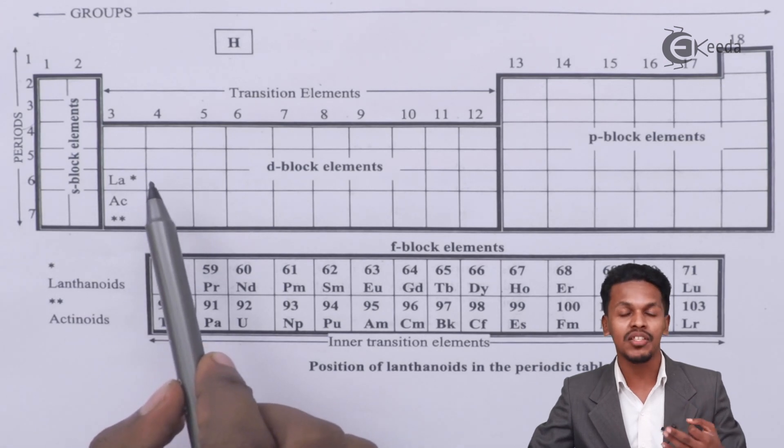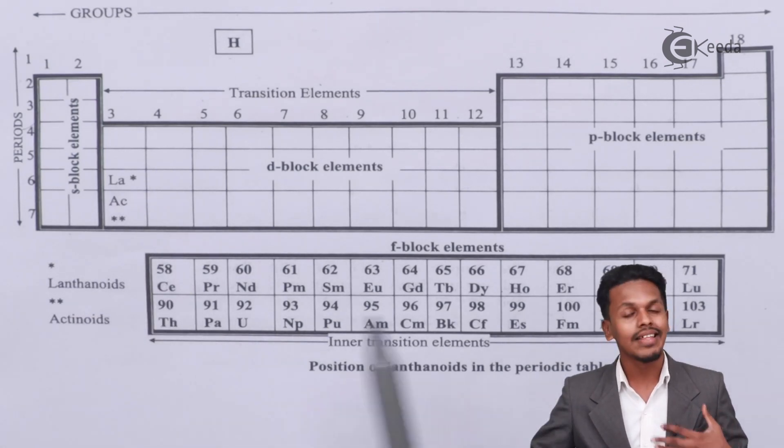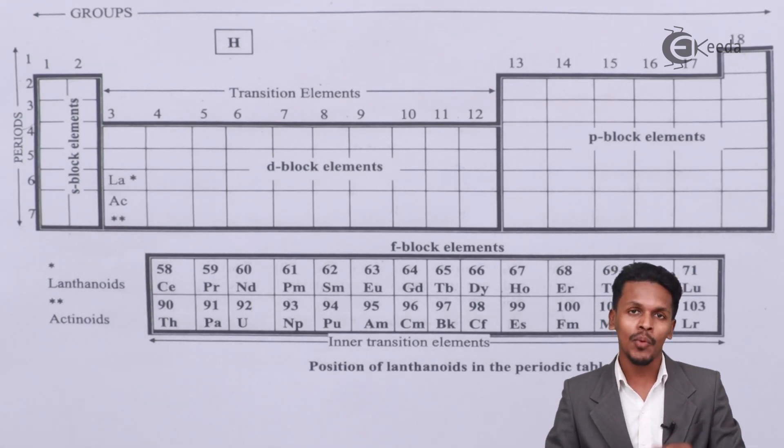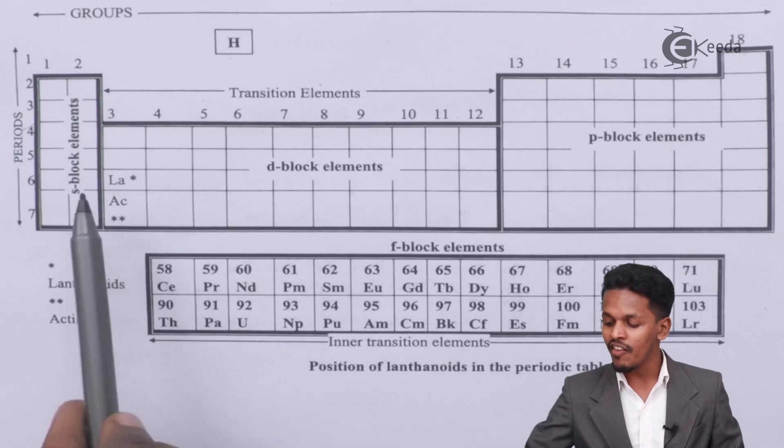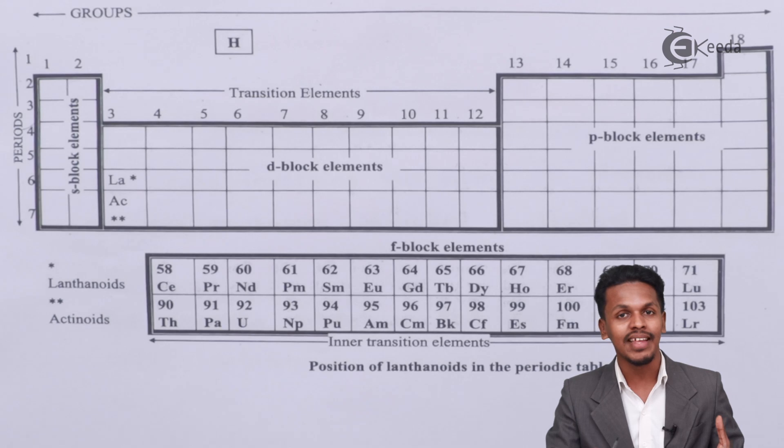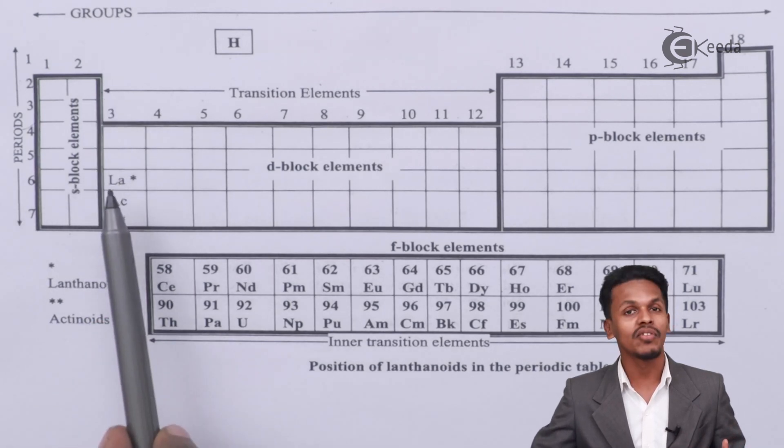And talking about hafnium, obviously it will have a valency of 4. So that is the reason that because of various other things these are basically kept in this position only. And suppose if all these elements have been kept side by side, in that case the whole periodic table would have been disrupted. And that is the reason there are many reasons for which all lanthanoids are basically kept in this position. So therefore this is the position of lanthanoids, that is nothing but the sixth period and the third group.